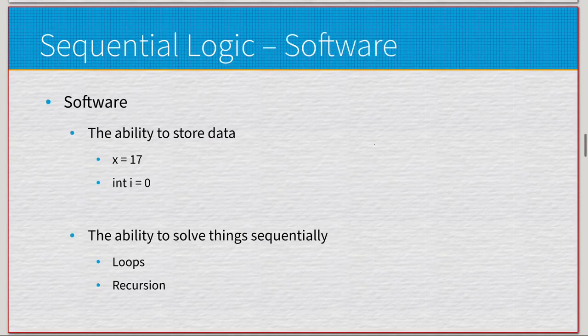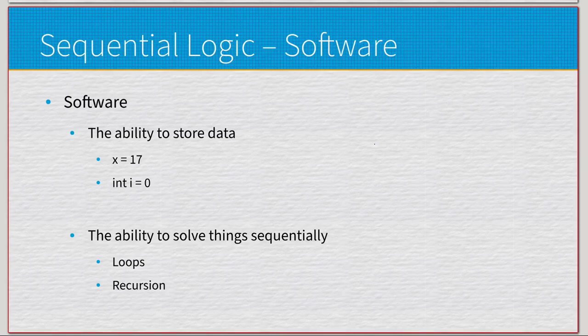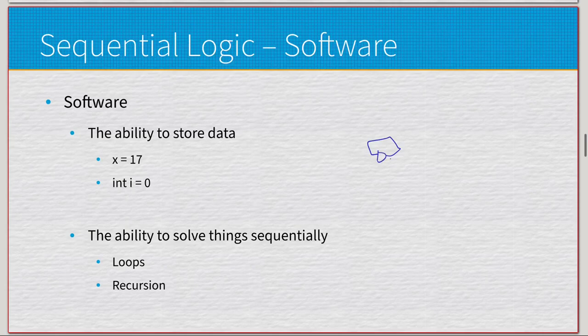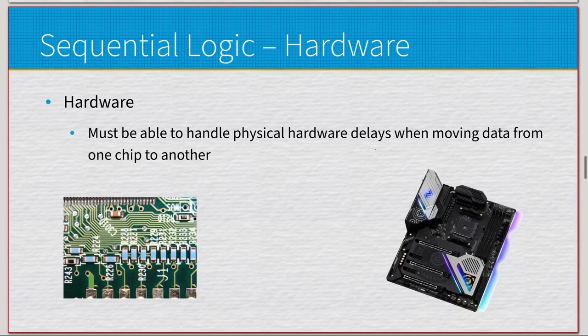Now in the software aspect, sequential logic gives us the ability to store data. We have examples of x equals 17 and i equals zero. We can store data in RAM, which is why we create RAM using sequential logic. It's the ability to store data in our system, and it also allows us the ability to solve things through the process of loops and recursion and a lot of the stuff that takes a course of time. And this idea of looping is going to be the same thing of looping a gate back into itself, stuff like that.